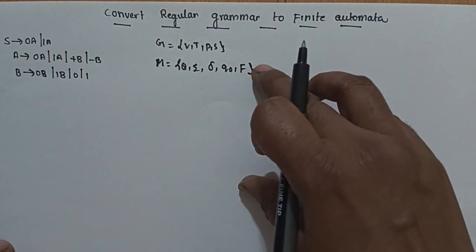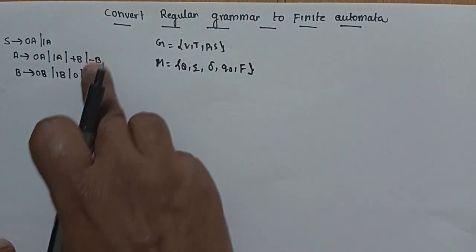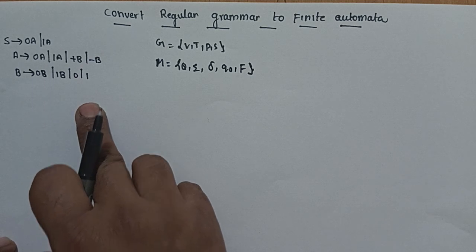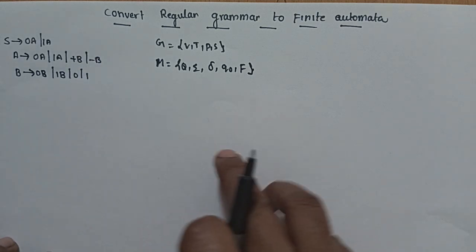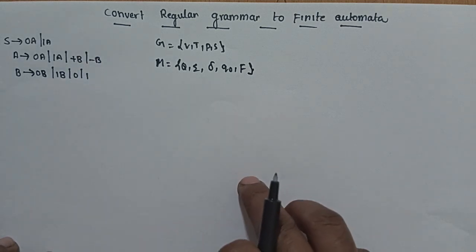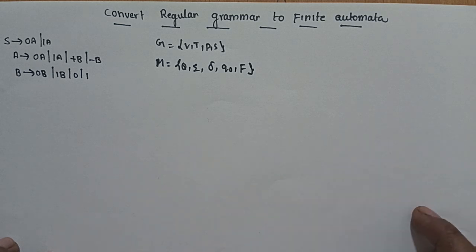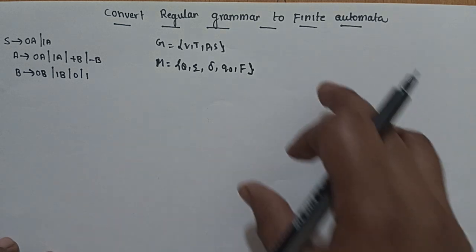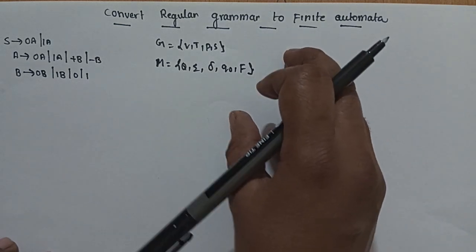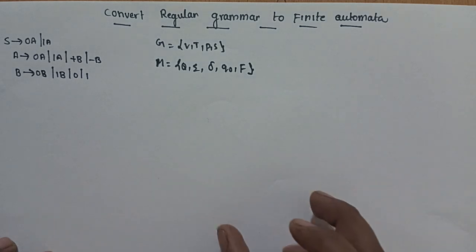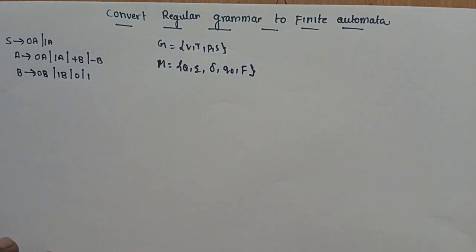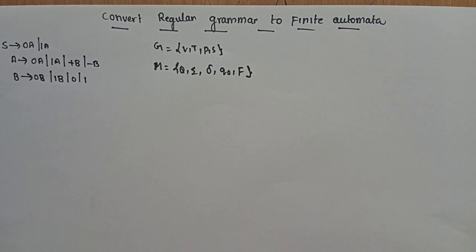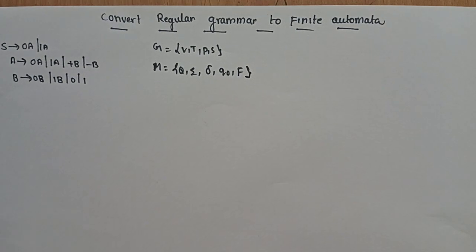I have a regular grammar and a set of productions. This set of productions corresponds to a finite state automata diagram. For every regular grammar, there exists a finite state automata.